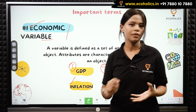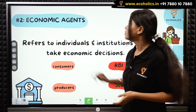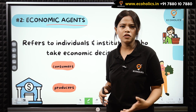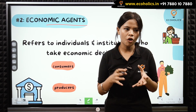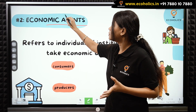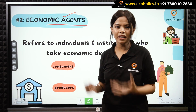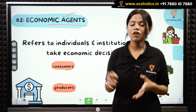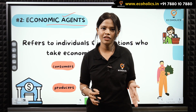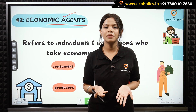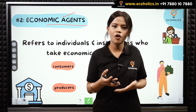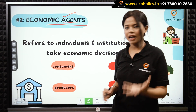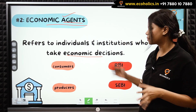The next important term is 'economic agents.' Agents are like life insurance agents or salespersons we see every now and then — people who are performing some activity. So economic agents are those people or persons who are performing some kind of economic activity. We learned in class 11th that a teacher is performing an economic activity by earning something for her life.